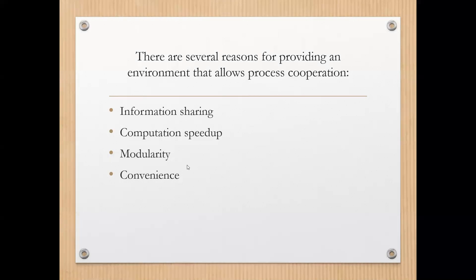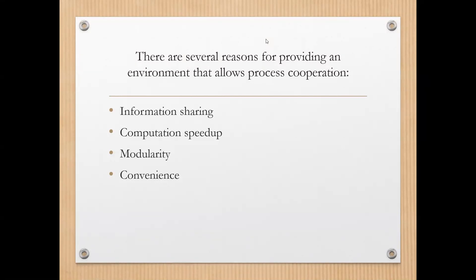The next reason is modularity. If we want to design a system by dividing it into separate modules, not only one person is going to design the entire system. We divide the system into different modules which will later be put together to achieve a single goal. These modules will also need to communicate with each other so that at the end we combine all designs to form one system. So modularity is one of the reasons behind process cooperation.